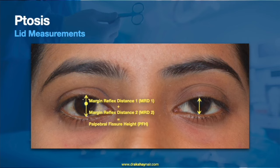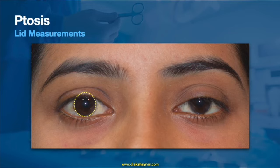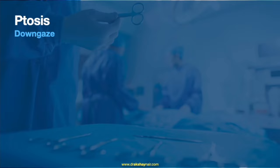It is important to know the position of the normal upper eyelid. It usually covers the superior 2 mm of the cornea or the limbus on top.